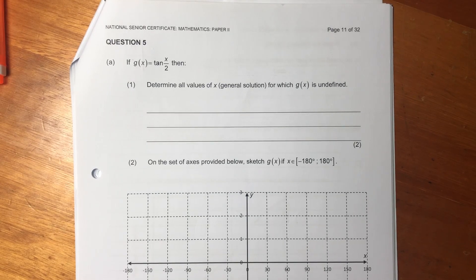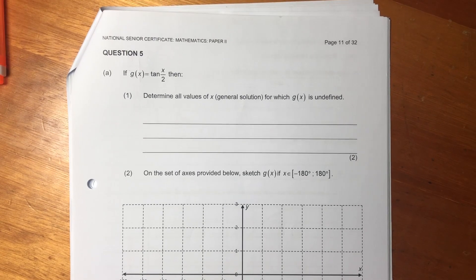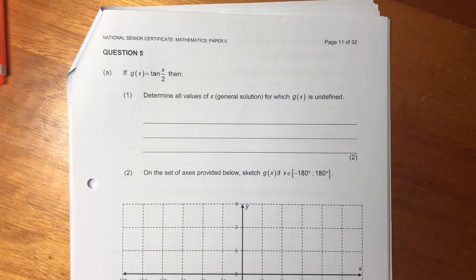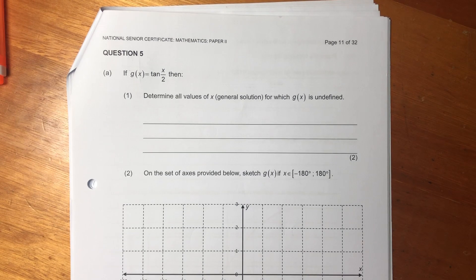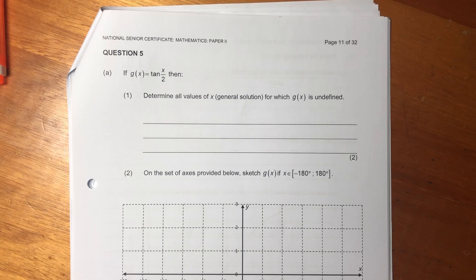Okay, let's do a better trig. Question 5. It says, if g of x equals tan x over 2,